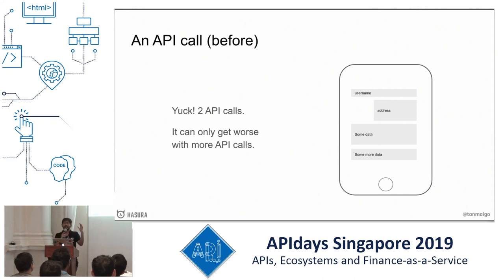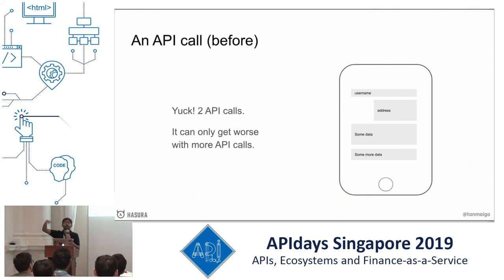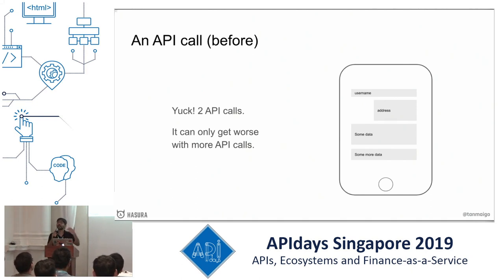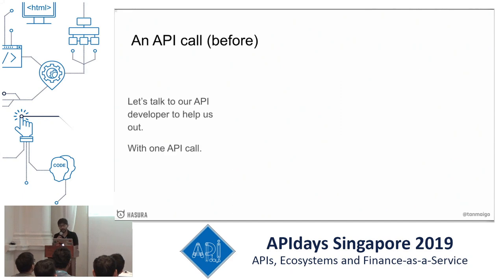You go to an app, it loads super fast and you're happy, you're just about to click on something, and then it shifts to the left because something else loaded. And that action is a delete action. This happens to me all the time on Trello. So this is why it's painful to make multiple API calls.